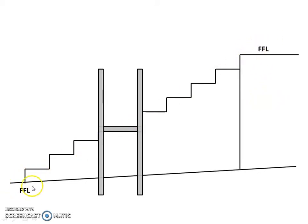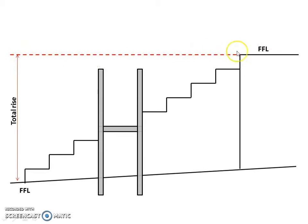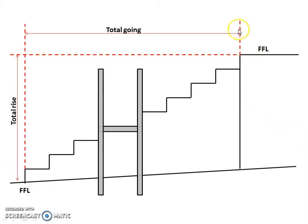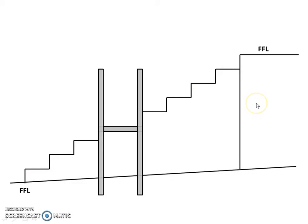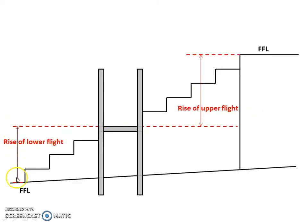Let's start with our finished floor levels, which we dealt with in the first video — the location at which our stairs end down the bottom and our veranda level up the top. There's our total rise from finished floor level to finished floor level, and our total going measured from first rise to last rise. For clarity, I'll refer to these as individual rise and individual going. The next terminology is a bit different: we have rise of lower flight and rise of upper flight. If you add those two rises together, that equals the total rise — just like all of the individual rises add up to our total rise.